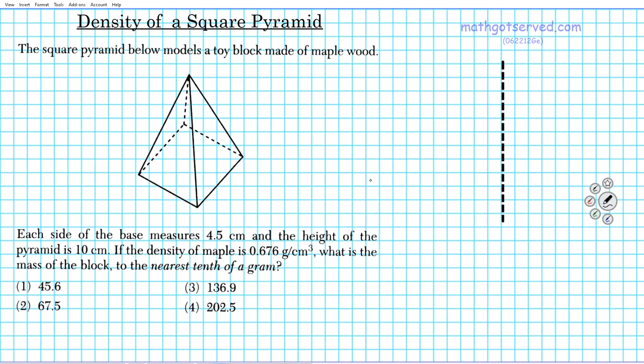The question reads: the square pyramid below models a toy block made of maple wood. Each side of the base measures 4.5 centimeters and the height of the pyramid is 10 centimeters. If the density of the maple is 0.676 grams per centimeter cubed, what is the mass of the block to the nearest tenth of a gram?